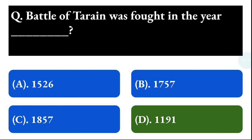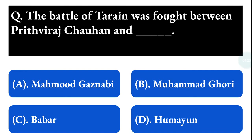Next question: the Battle of Tarain was fought between Prithviraj and — option A: Muhammad Ghaznavid, option B: Muhammad Ghori, option C: Babur, option D: Humayun. The correct answer is option B, that is Muhammad Ghori.